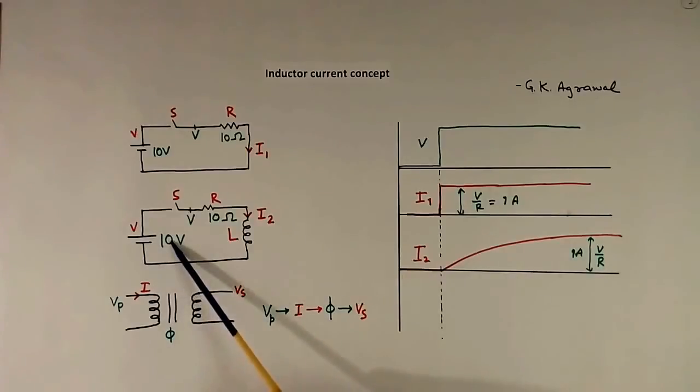That means if it is 10V battery voltage and 10 Ohm resistor value, then 10 by 10, 1A will come.